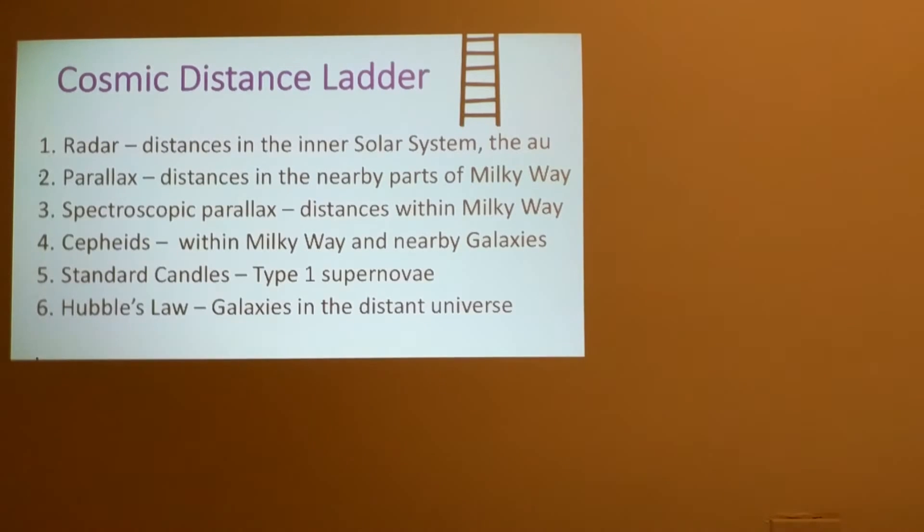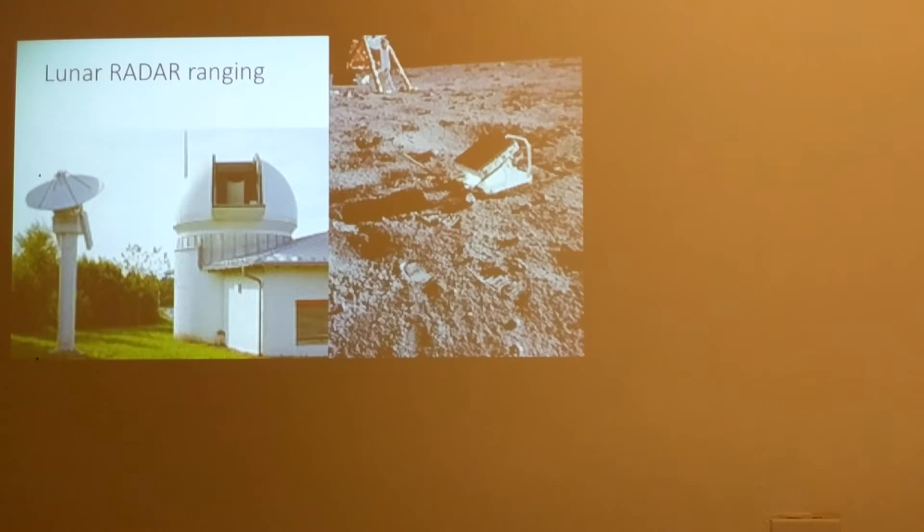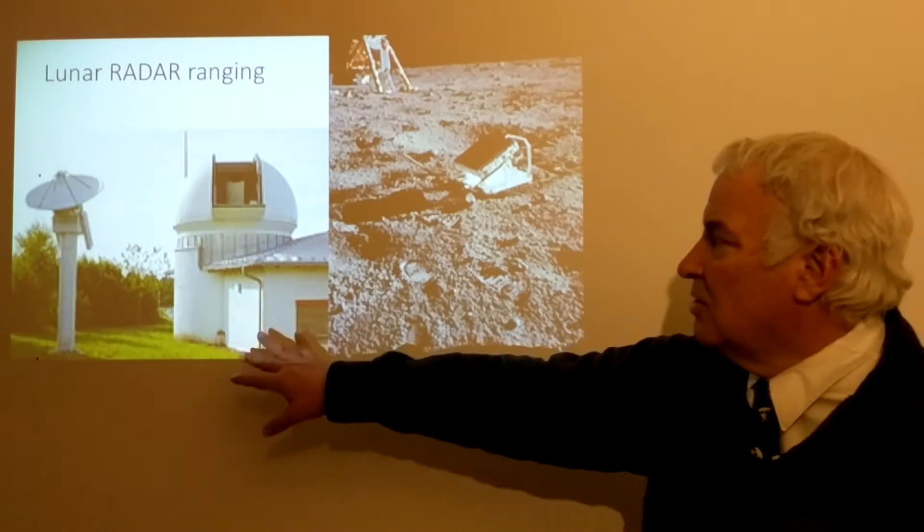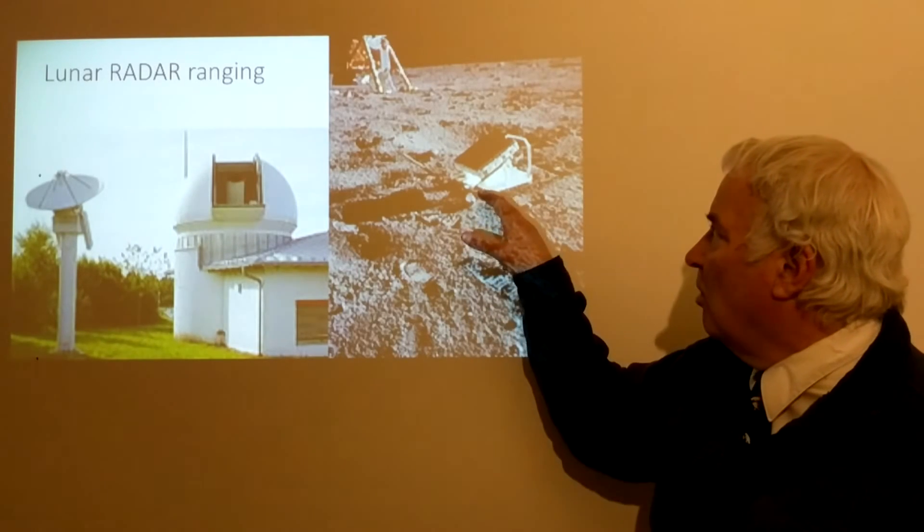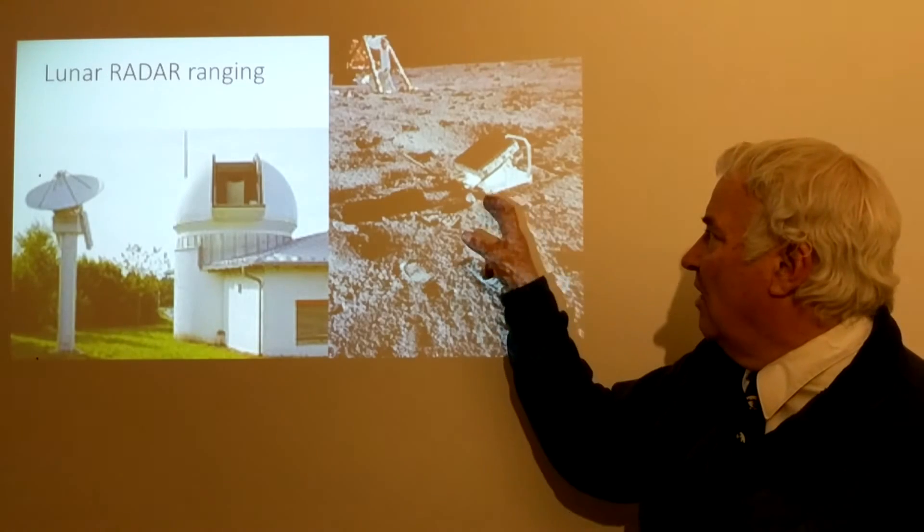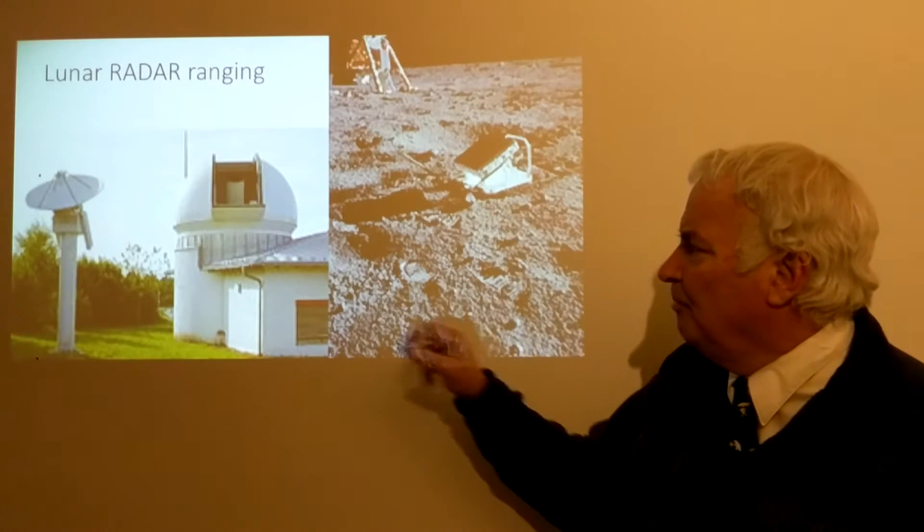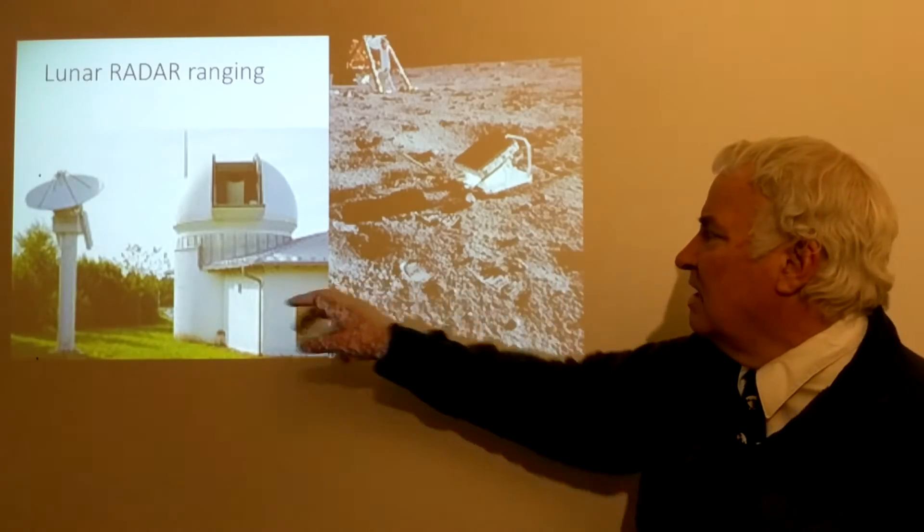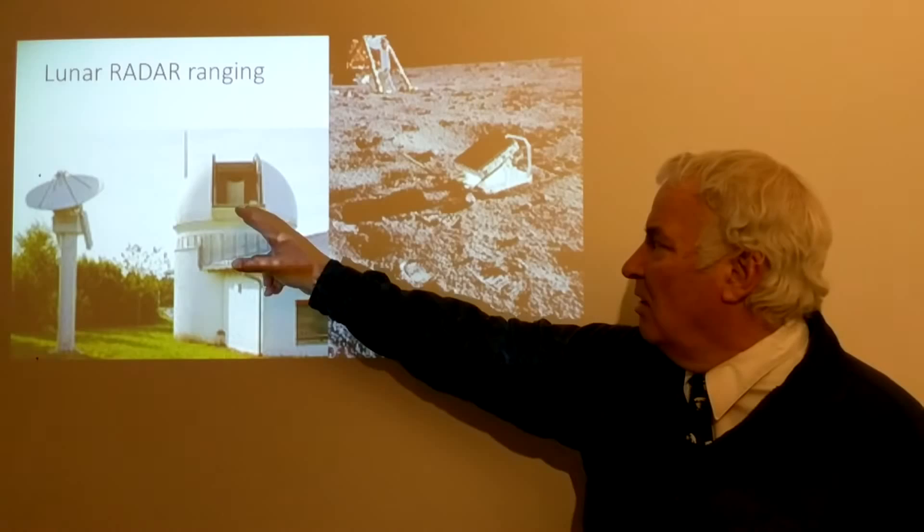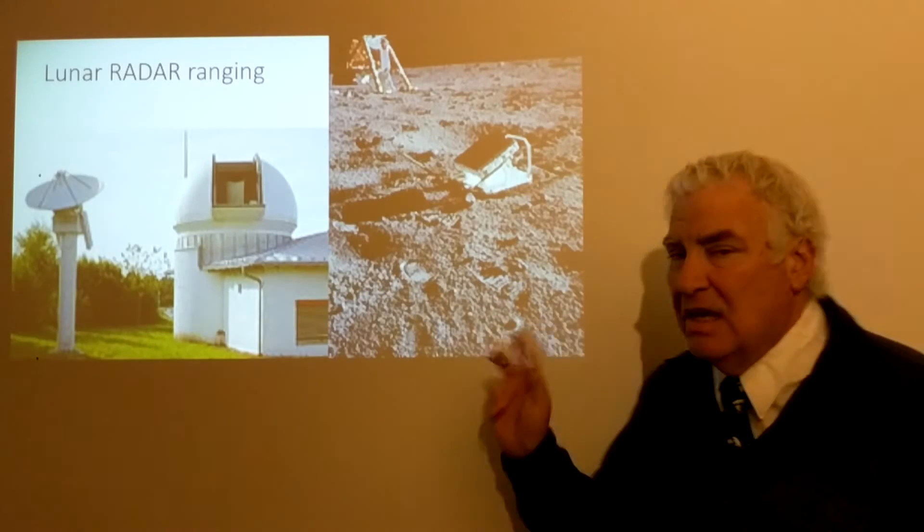So first of all we look at the nearby things, for instance the moon. Lunar radar ranging can be used. Here is an observatory that's doing that. This is made possible by astronauts that literally put a mirror on the moon and this reflects laser beams that are sent to that mirror and then bounces off the moon and is returned, and the key is measuring the time.